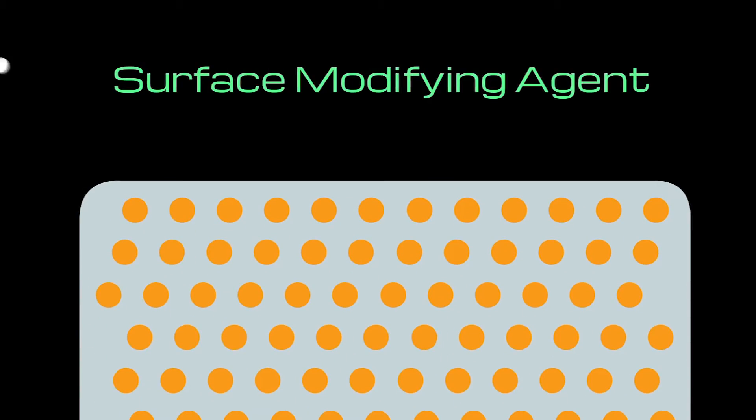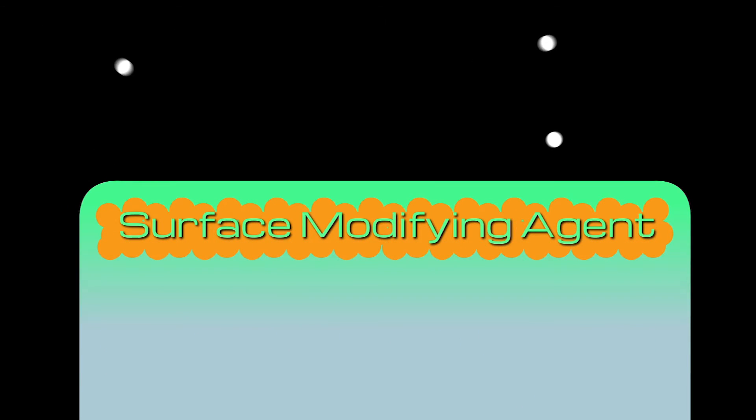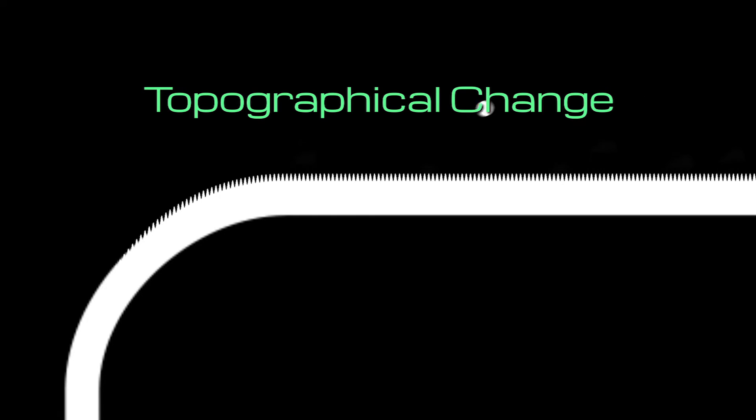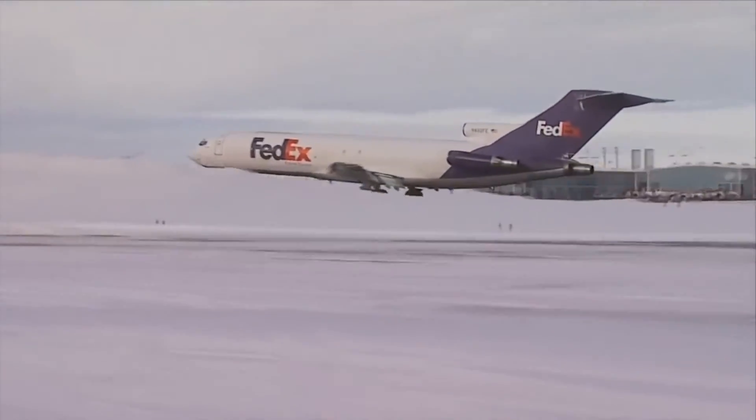By using surface modifying agents, we're able to controllably change surface chemical composition without changing the bulk mechanical properties. Also, by looking at surface topographical change, we're able to control what happens at the moment a potential contaminant comes into contact, which is beneficial for extreme environments such as aircraft wings.